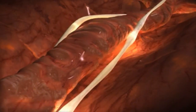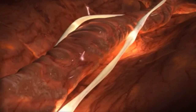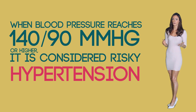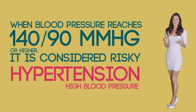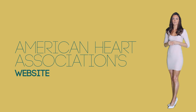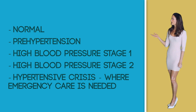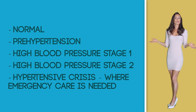For example, if the arteries are narrow and the volume of blood pumped by the heart is high, the person will experience high blood pressure. A high blood pressure can affect different organs of the body, including the heart. When blood pressure reaches approximately 140 over 90 millimeters of mercury or higher, it is considered risky and this condition is known as hypertension or high blood pressure. Blood pressure measures fall into five general categories: normal, pre-hypertension, high blood pressure stage one, high blood pressure stage two, and finally hypertensive crisis, where emergency care is needed.